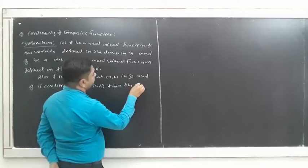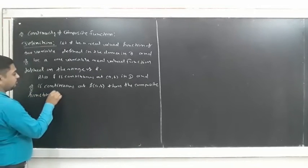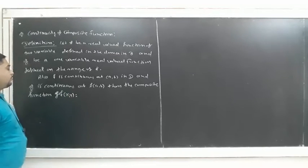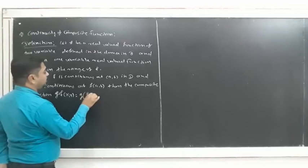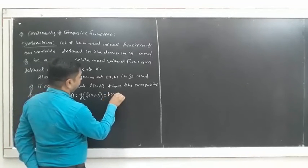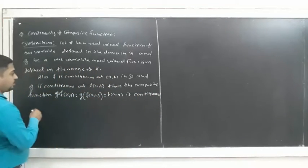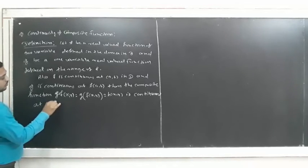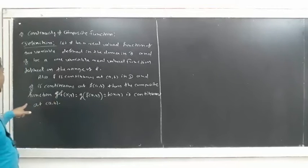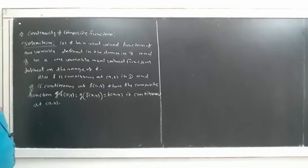Then the composite function g of f(x, y) is equal to h(x, y). So h(x, y) is continuous at (a, b). That is, if f is continuous at (a, b) and g is continuous at f(a, b), then we can say that g of f(x, y), that is h(x, y), the composite function, is continuous at (a, b).